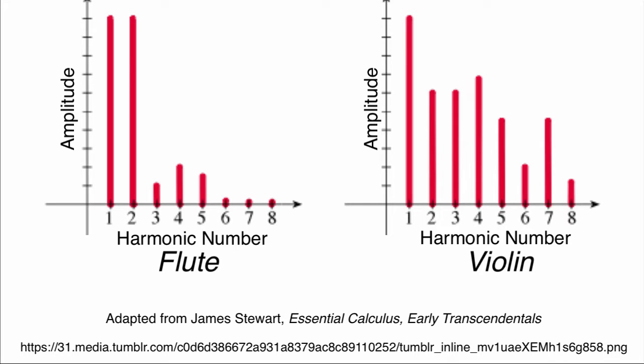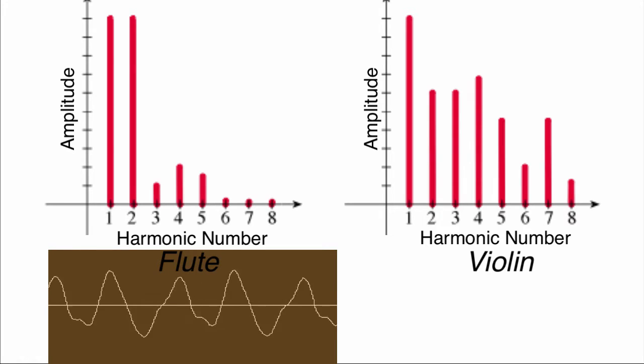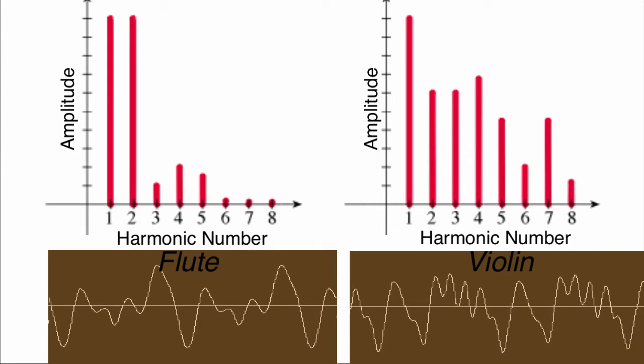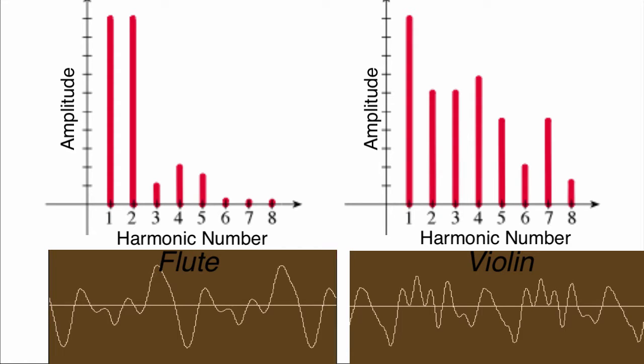For example, a flute playing the note G will sound different than a violin playing the same frequency of note because they have different amplitudes of the various harmonics.